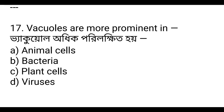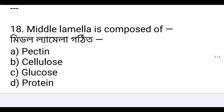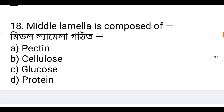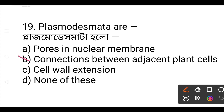Option C: plant cell. The connection between adjacent plant cells is option B — plasmodesmata. Plasmodesmata connects adjacent plant cells.